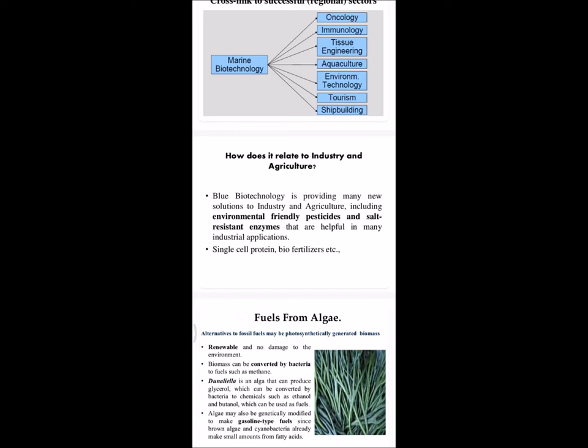The sixth and seventh sectors are tourism and shipbuilding. At the industry and agriculture level, marine biotechnology provides us with environmentally friendly pesticides and bio-fertilizers. These are beneficial for the environment and for crops too. For example, cyanobacteria is used in the production of bio-fertilizers.